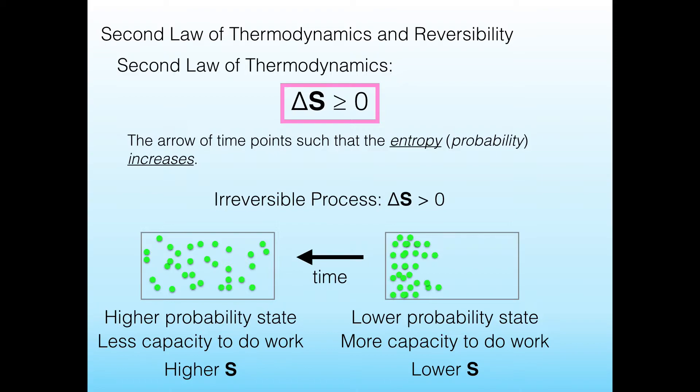And this tells us the direction that time points. So in this example that we've been doing all along, these molecules, if we could gather them all over to the left side of the box, then at some point, maybe by collecting them over there or putting a membrane in between two halves of the box, if we release that membrane, then eventually they'll diffuse and fill the whole box and reach a higher entropy state.